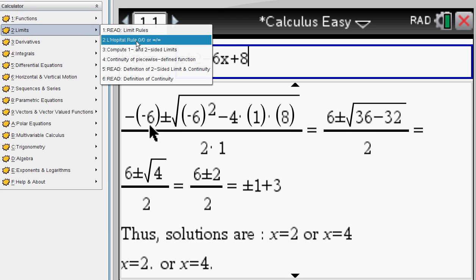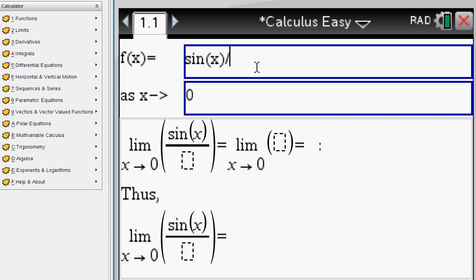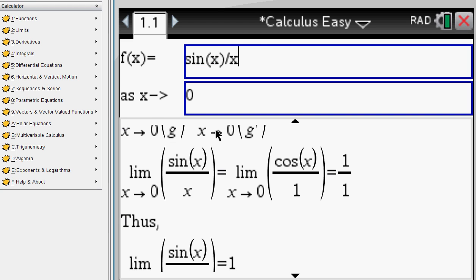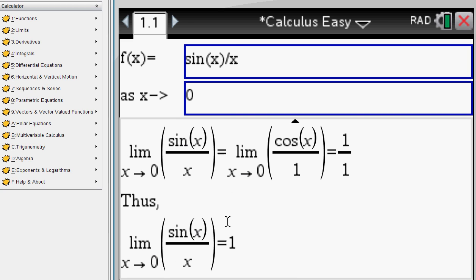Let's look at some limits. L'Hôpital's rule is always everybody's favorite. Sine of x over x as x approaches 0. L'Hôpital's rule is invoked because both top and bottom approach 0. So your L'Hôpital's rule applied gives you the derivative on top. Its cosine derivative on the bottom is 1 evaluated at 0. Each gives you 1 over 1.